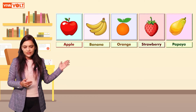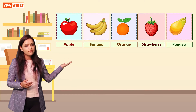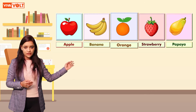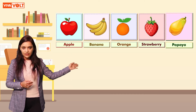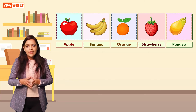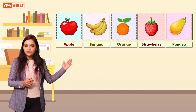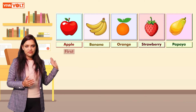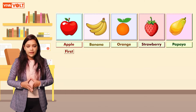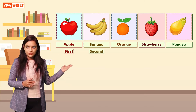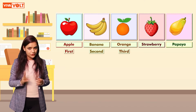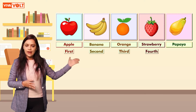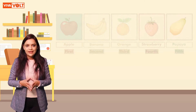Look at this example of a series consisting of fruits: Apple, Banana, Orange, Strawberry, Papaya. Apple from the left is at the first position, Banana at the second position, Orange at the third position, Strawberry at the fourth position, and Papaya at the fifth position.